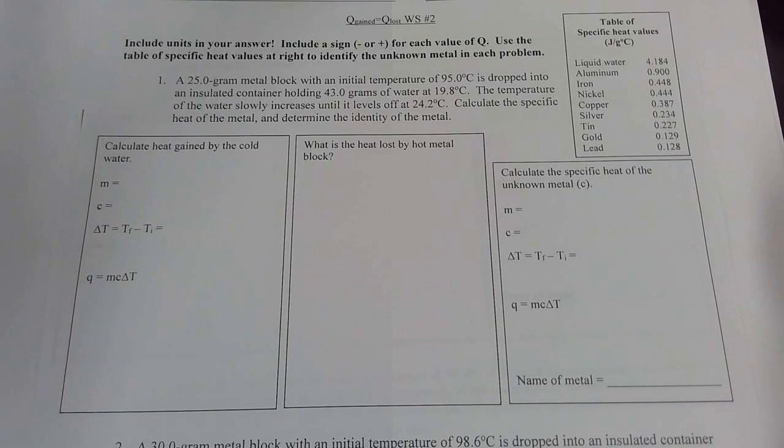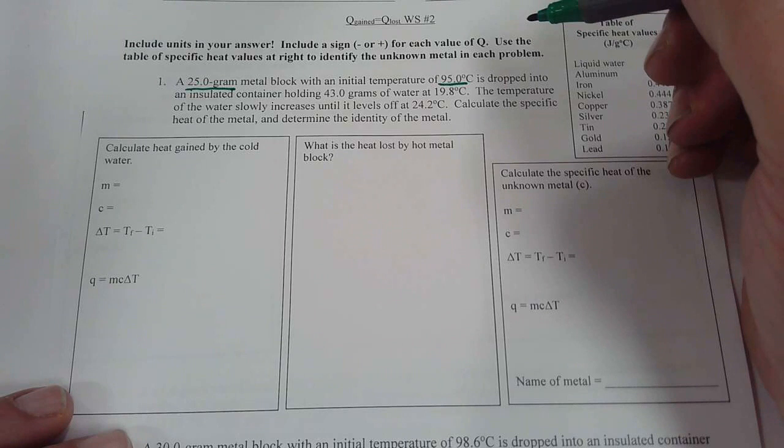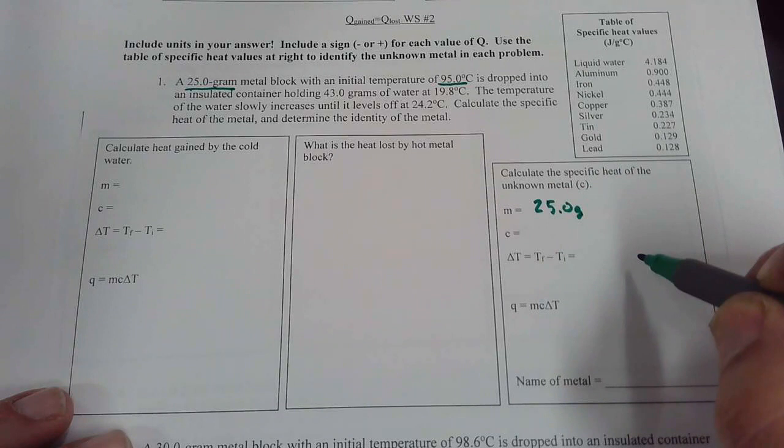So in the first case we have a 25 gram metal block that has an initial temperature of 95 degrees. So in the metal, the mass we know is 25.0 grams. We know that its initial temperature, so final minus initial, is going to be 95.0 degrees Celsius.